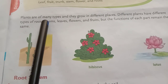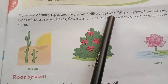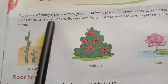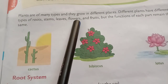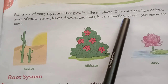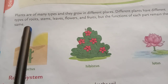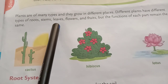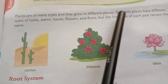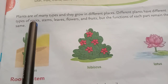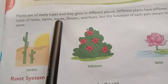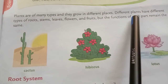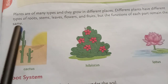Plants are of many types and they grow in different places. Different places have different types of roots, stems, leaves, flowers and fruits, but the function of each part remains the same.